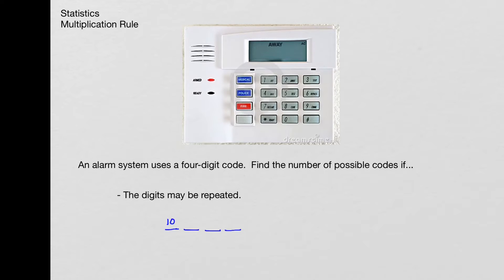And now I will put down how many possibilities there are the second time. Because we can repeat, there's going to be ten the second time, and then ten the third time, and ten the fourth time. So when I go and multiply those four numbers together, I get 10,000.